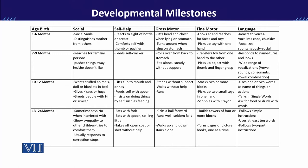For example, if we want to explain developmental milestones, we categorize them in 5 broader domains. Number 1: Social. Number 2: Self-Help. Number 3: Gross Motor. Number 4: Fine Motor. Number 5: Language.